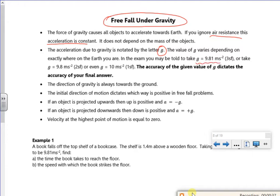9.81 for three sig figs, 9.8 for two sig figs, or 10 for one sig fig. Any question that mentions gravity, the final answer for that part must be the same accuracy as g. So that's really, really important.